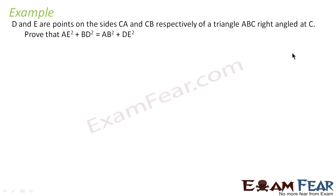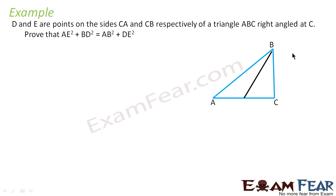The next question: D and E are points on sides CA and CB respectively of triangle ABC, right-angled at C. We have to prove that AE² + BD² = AB² + DE². Let's form right triangle ABC with right angle at C, and draw points D on CA and E on CB.